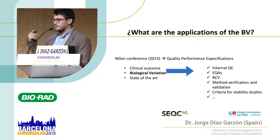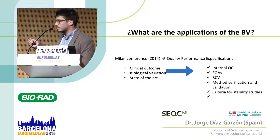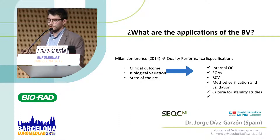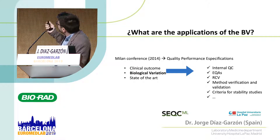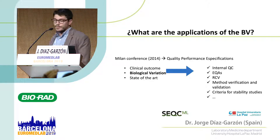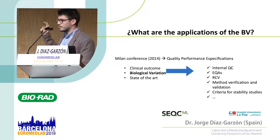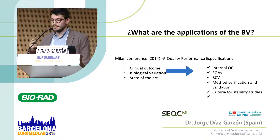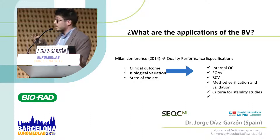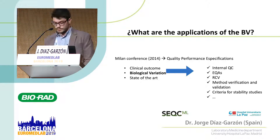Biological variation can have application for interpreting internal quality control results, but it also has many more applications, like the reference change value, method verification or validation. All of those applications have a direct impact on patient results, and because of that, we need robust estimates.